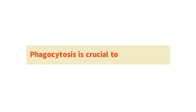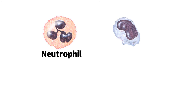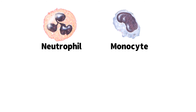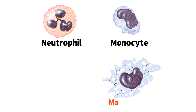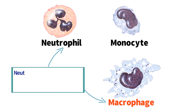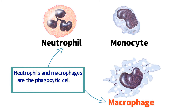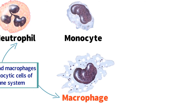Number 3. Phagocytosis is crucial to inflammation. Chemotaxis draws many neutrophils and monocytes from the blood into the site of injury. As monocytes exit the blood and enter the tissue, they become macrophages. Neutrophils and macrophages are the phagocytic cells of the immune system, meaning they are the cells capable of performing phagocytosis.